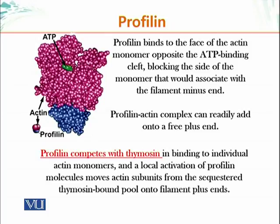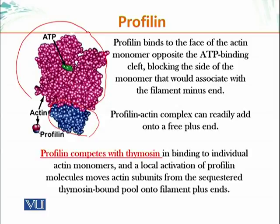Profilin blocks the side of the monomer that would associate with the minus end, and once profilin has bound the actin monomer, it will prevent thymosin from binding. Here we have the profilin molecule shown in blue, bound to an actin monomer at the ATP binding cleft. Once profilin binds, it prevents thymosin from binding, and actin monomers bound to profilin can be added on to the plus ends of actin filaments.